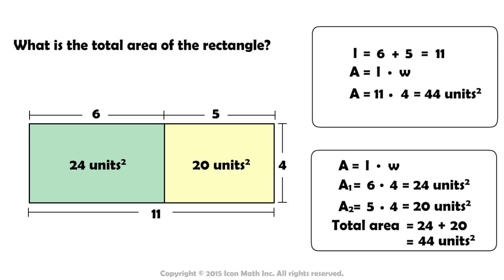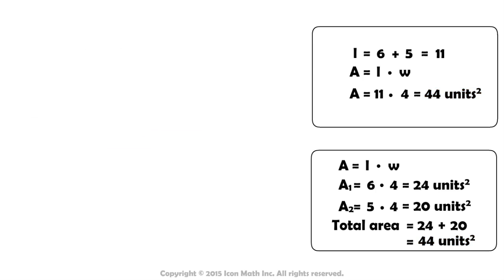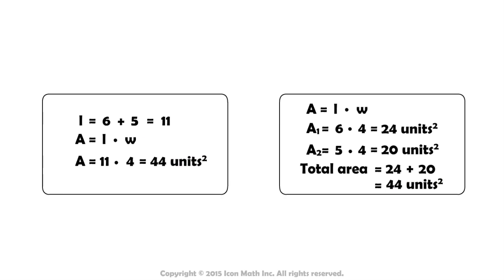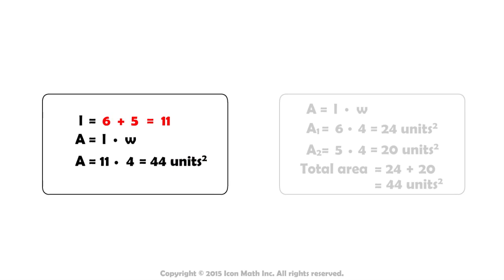Whether method 1 or 2 is used, the area is 44 units squared. Let's represent both methods by expressions. In method 1, we found the sum of 6 and 5, then multiplied by 4.